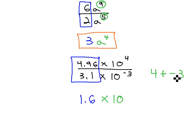4 minus a negative 3, if we add the opposite, is actually 7. Be very careful with negative exponents.